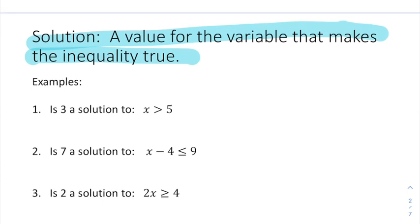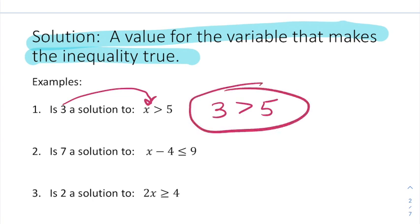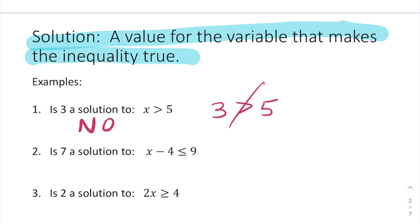So let's go through a few examples. The first one says, is 3 a solution to x is greater than 5? Well, if I plug 3 in for x, that would mean we're being asked, is 3 greater than 5? That is not true. 3 is smaller than 5. So we would say no.